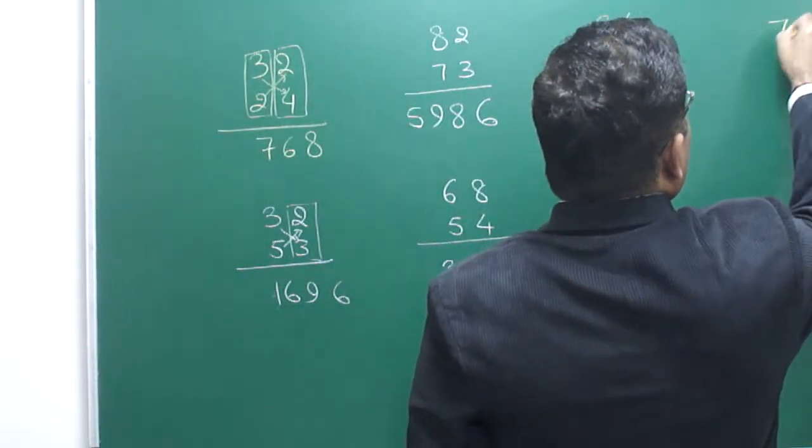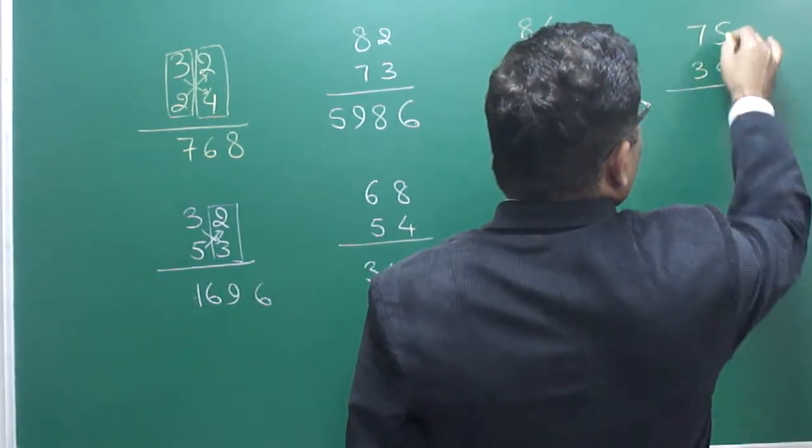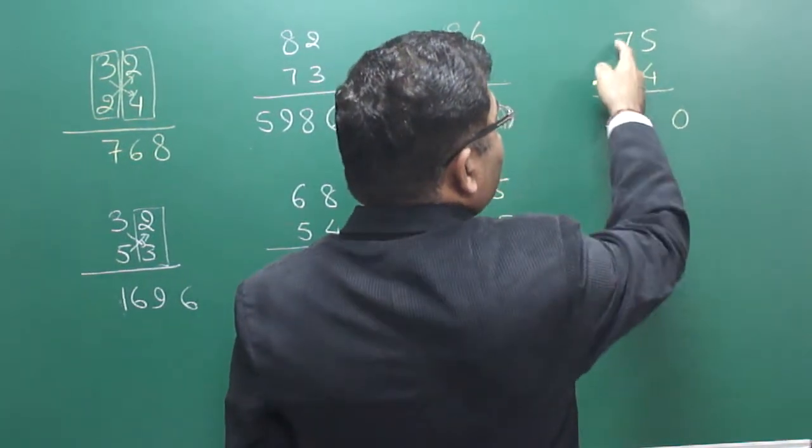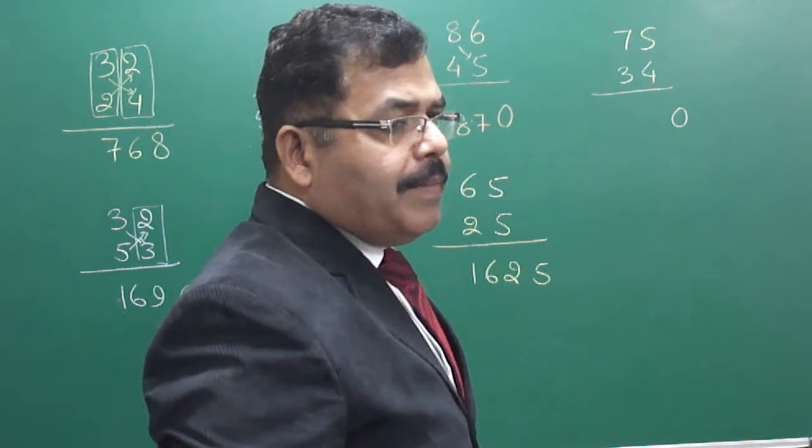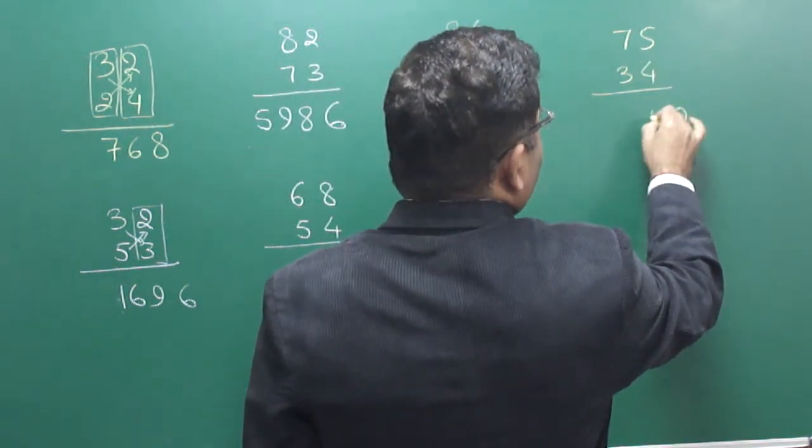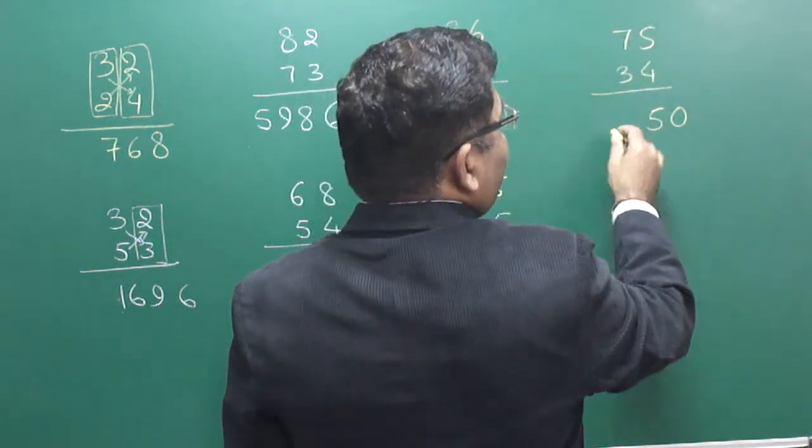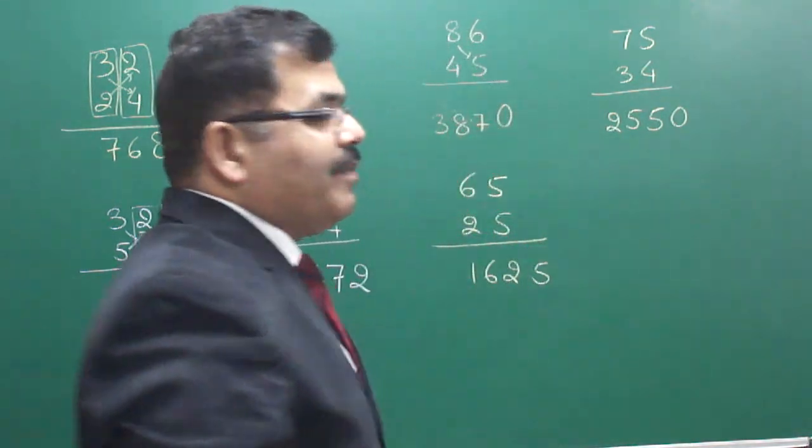Some more examples we can be dealing with this. 75 x 34. What? 5 x 4 = 20. Write 0, carry 2. 7 x 4 = 28 plus 15. 28 plus 15 is 43. And carried over 2 makes it 45. So 5, carry 4. 7 x 3 = 21 and 4, 25. So 2550.